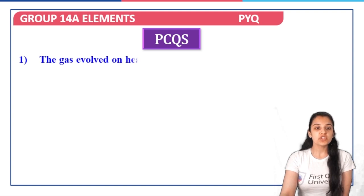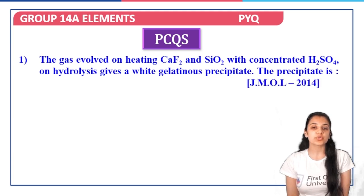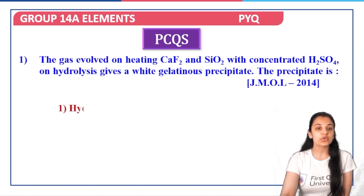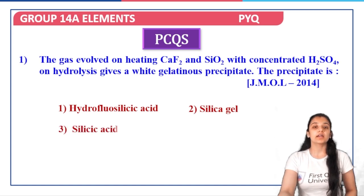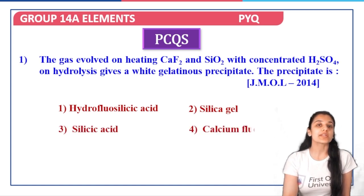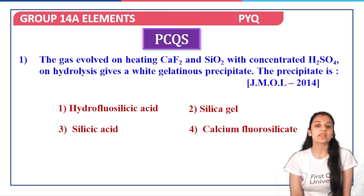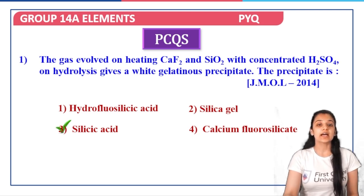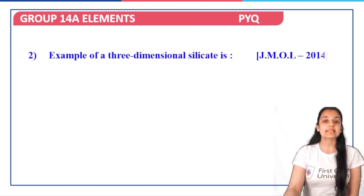The first question: the gas involved on heating calcium fluoride and silica with concentrated H2SO4, which on hydrolysis gives a white gelatinous precipitate — what is the precipitate? Once you know the gas involved, you'll know the precipitate formed. When silica and calcium fluoride react with concentrated sulfuric acid, what we get is a white gelatinous precipitate of silicic acid.